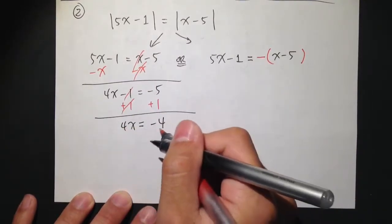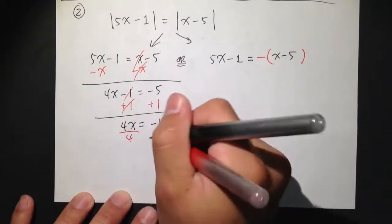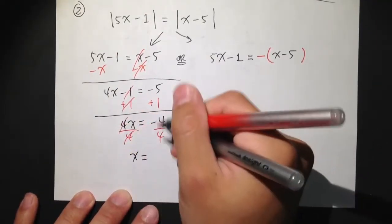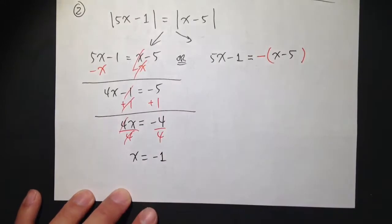4 times x is equal to negative 4, divide both sides by 4, and I will end up with x is equal to negative 1.